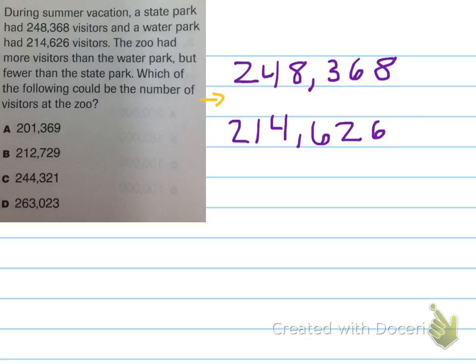So let's look at this one. 201,369. Well, I see that it starts with 201,000. I already know 201,000 would be less than 214,000. So that can't be it. I'm going to cross that one out.